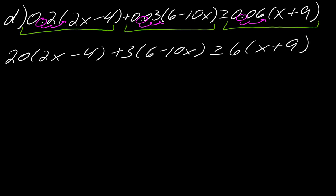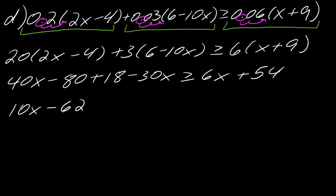And so now that we've cleared the decimals, we can just push forward with the problem. So this will be 40x - 80 + 18 - 30x is greater than or equal to 6x + 54. So now we can go ahead and collect our like terms on the left side. So I've got 40 minus 30x is 10x. And then -80 + 18 is -62.